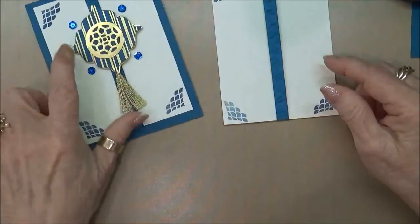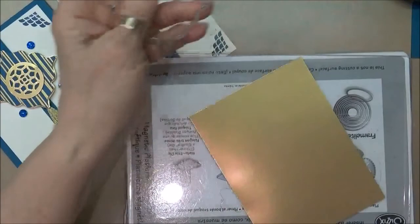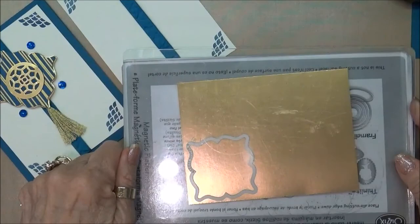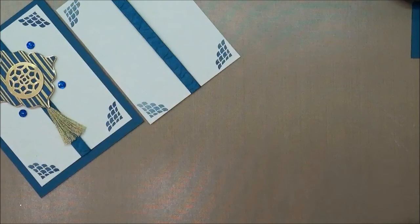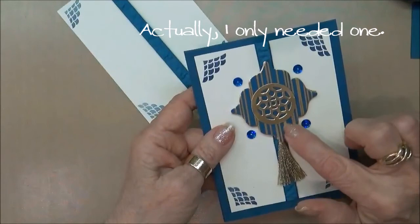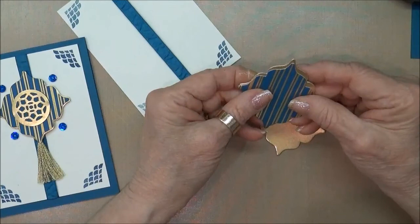To make this portion of the card, I'm going to take my Big Shot and the magnetic platform and a piece of the gold foil paper. I'm going to run this framelit through my Big Shot with a cutting plate on top. This is what I get—I ran it through twice so that I could make a background for this little piece of designer series paper. I ran the designer series paper through the exact same die.